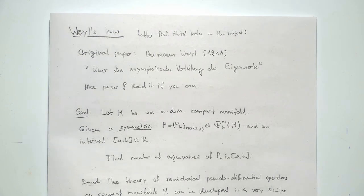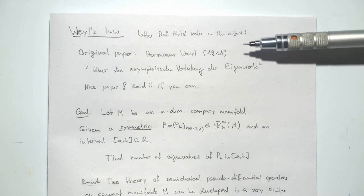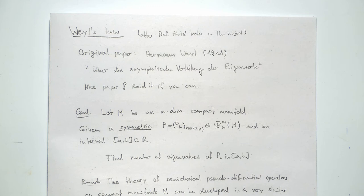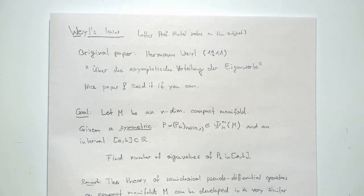Now we can come to Weyl's law. Here I'm following Professor Hintz's notes on the subject. The original paper is by Hermann Weyl, who was an ETH professor about 100 years ago. He published a paper in 1911 called 'Über die asymptotische Verteilung der Eigenwerte' — it's a very nice paper about eigenvalues of differential operators. If you can read German, go ahead and read it; I think it's even readable for first-year students with some Wikipedia lookups.